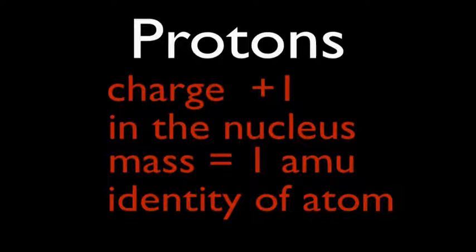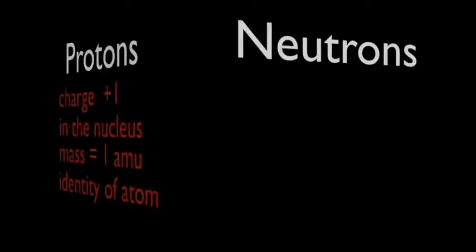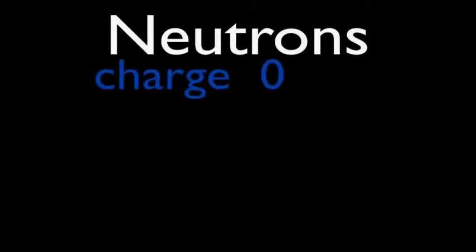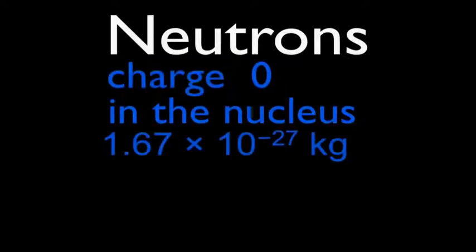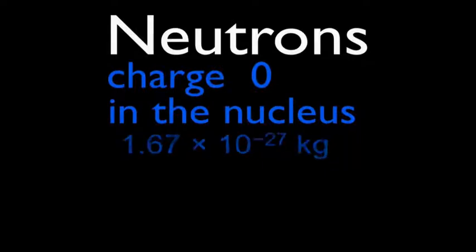Next, I will discuss the next subatomic particle which is neutrons. Neutrons carry no charge, stay in the nucleus and its mass is 1.67 times 10 to the power minus 27 kilogram. Its mass is also known as 1 AMU.